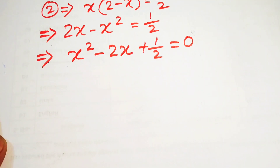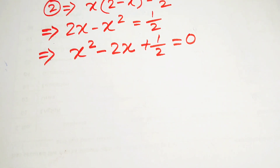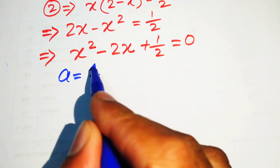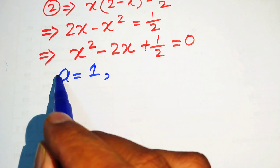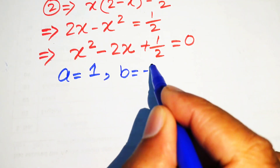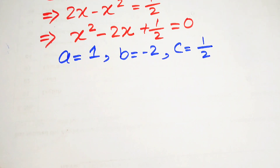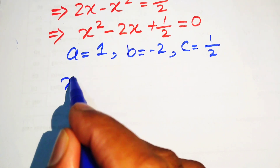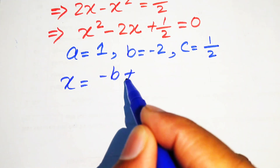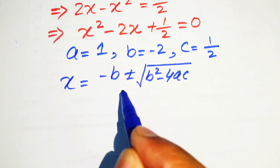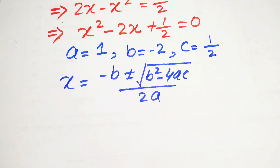This equation is now quadratic in x, so we use the quadratic formula. The coefficients are: a equals 1 (coefficient of x squared), b equals minus 2 (coefficient of x), and c equals 1 over 2. The quadratic formula is x equals minus b plus or minus square root of b squared minus 4ac, divided by 2a.